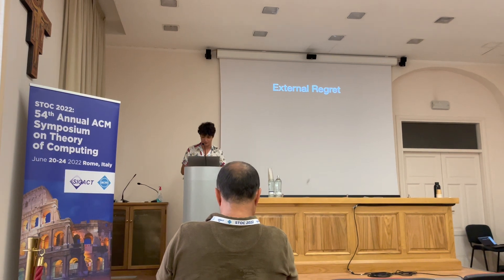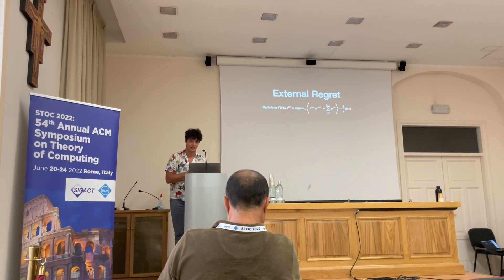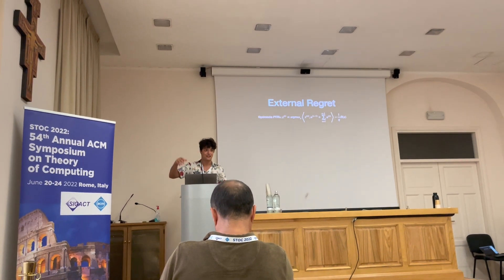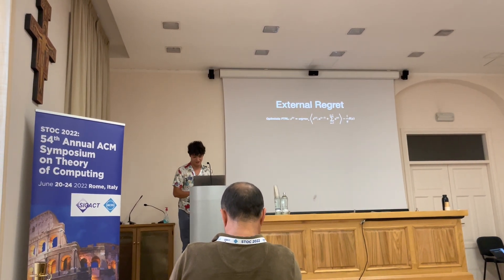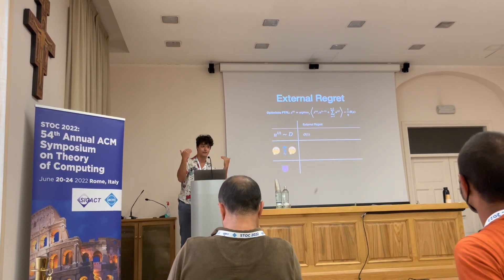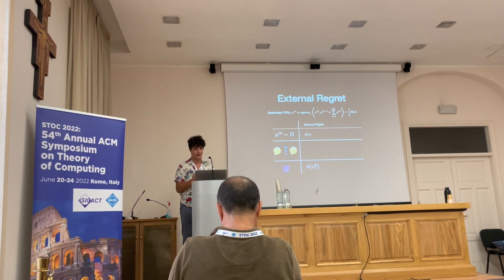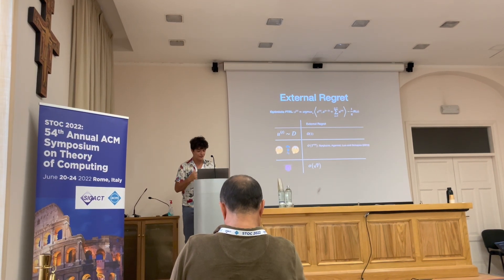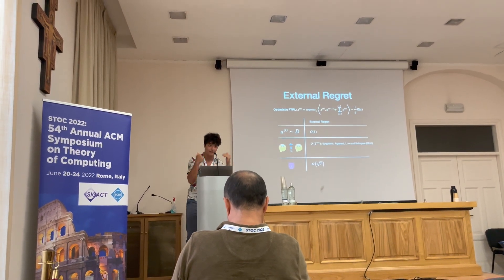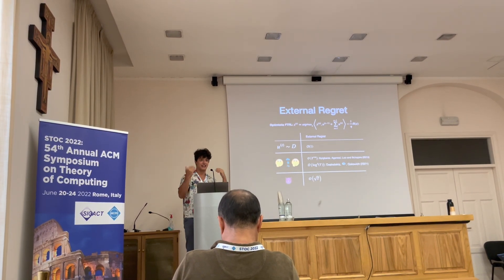For external regret, we have a canonical algorithm: Optimistic Follow-the-Regularized-Leader (OFTRL). We essentially choose the best fixed action in hindsight, add a little recency bias, and a little regularization. Looking at the spectrum of utility sources: this gets constant regret with a fixed distribution, and square root of T regret even in the adversarial case — sub-linear even in the worst case. Since 2015, Syrgkanis et al. proved that in the game setting we can actually do better than the adversarial bound — down to T to the one-fourth. And recently, we got it down to polylogarithmic.